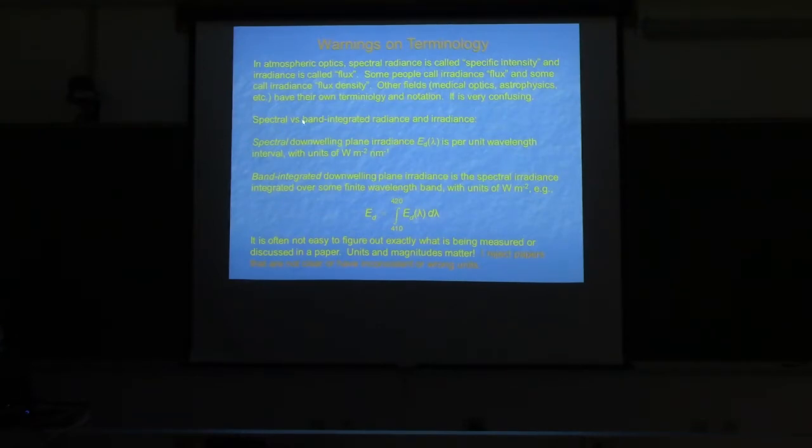The other thing is spectral versus band integrated. The spectral downwelling plane irradiance is per unit wavelength interval with these units. If you have a band integrated value, you integrate it over whatever wavelength band you're interested in.